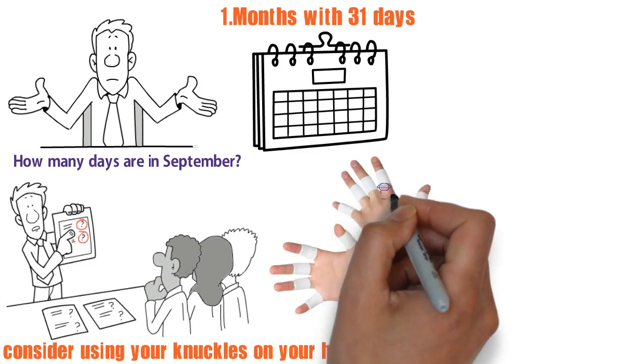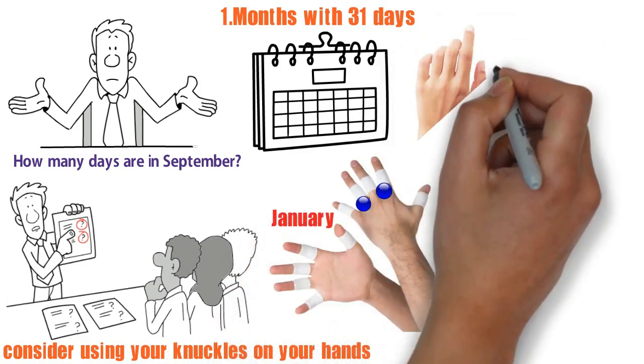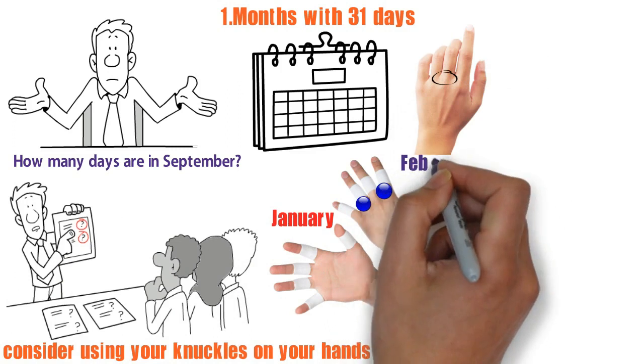with the knuckle of your forefinger as January. The valley between the forefinger and middle finger is February. Keep rotating